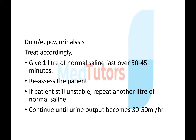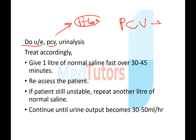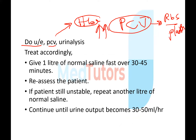Investigation includes electrolytes, urea, creatinine, and packed cell volume (PCV). Note that PCV is affected by hydration status — it is relatively elevated in dehydration due to plasma loss. Hemoglobin concentration is not affected by dehydration. Urinalysis is also performed.